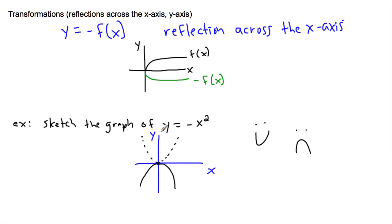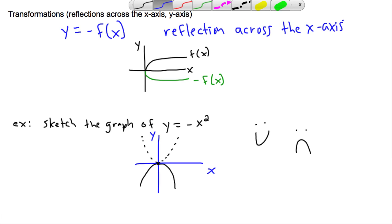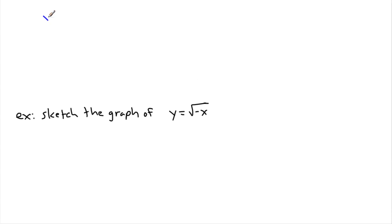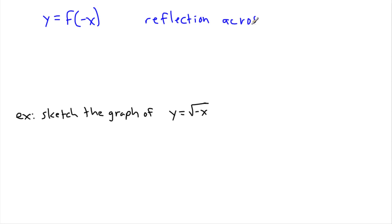But this works for any graph — it doesn't matter what it is. It could be a square root, it could be some weird-looking function. All that matters is that you're reflecting across the x-axis. Now we can also have something like y equals f of negative x — that's a reflection across the y-axis.